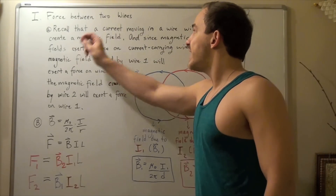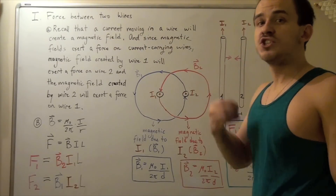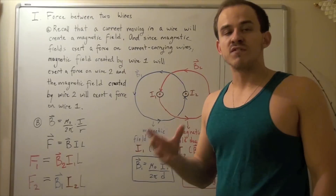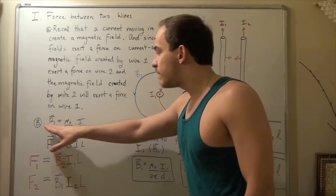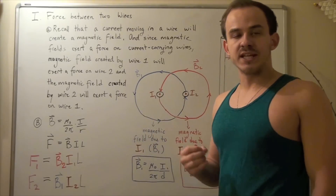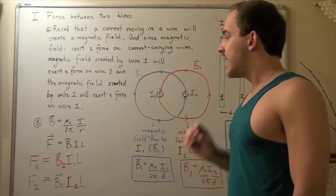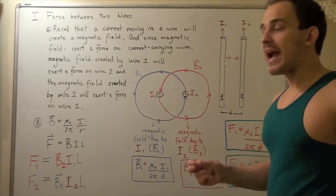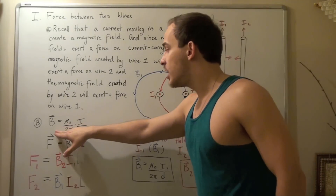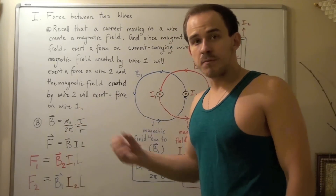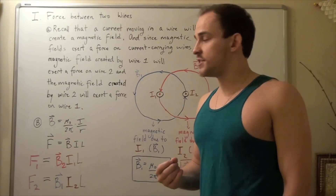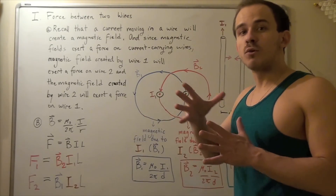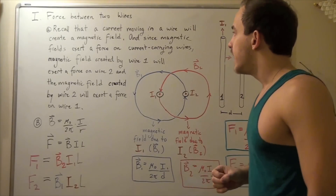Recall that any current moving through a wire will create a magnetic field. The magnitude of this magnetic field is given by the formula B = μ₀I / (2πR), while the direction is given by the right-hand rule. Here, μ₀ is the permeability of free space, I is the current moving through the wire, and R is the distance from the wire at which we want to find the magnetic field.